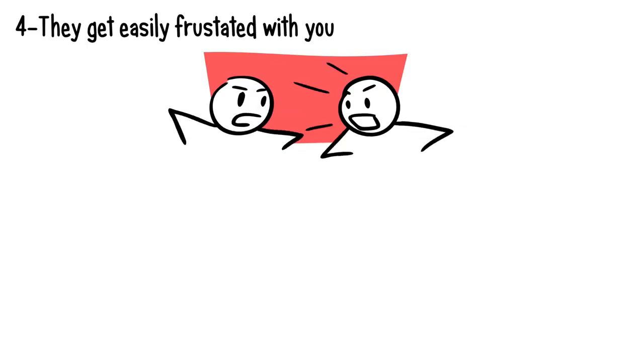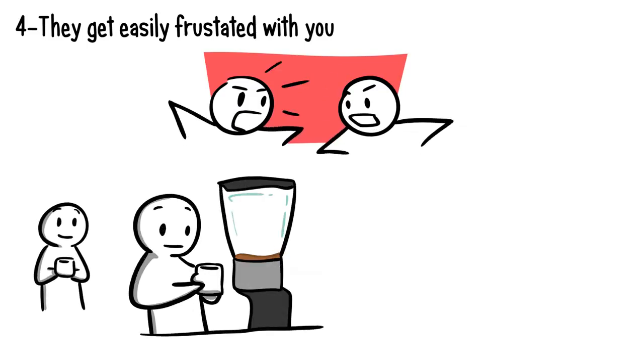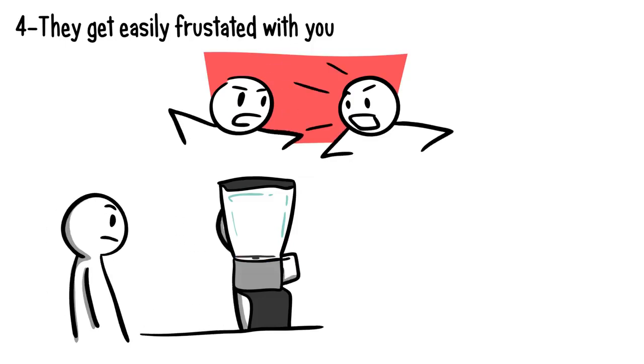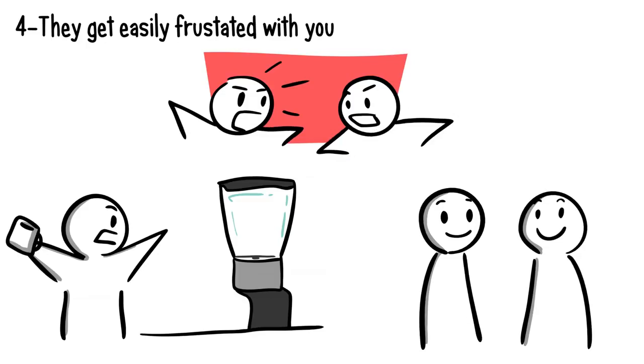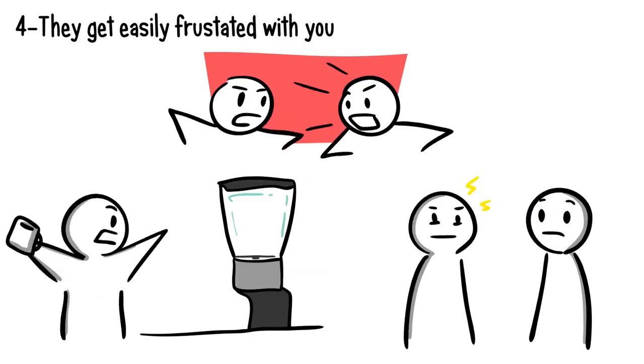Number four: They get easily frustrated with you. Do the two of you argue or disagree over matters on a daily basis? When someone dislikes you, they'll do anything except make things easy for you. They might have been in a good mood, but once they interact with you, they turn sour, bitter, and angry.